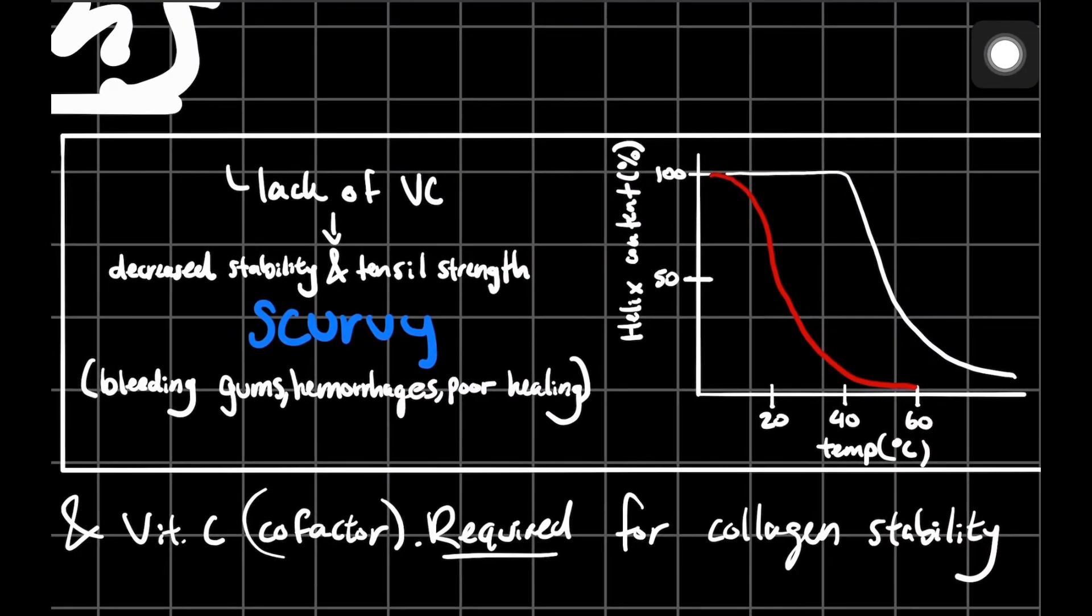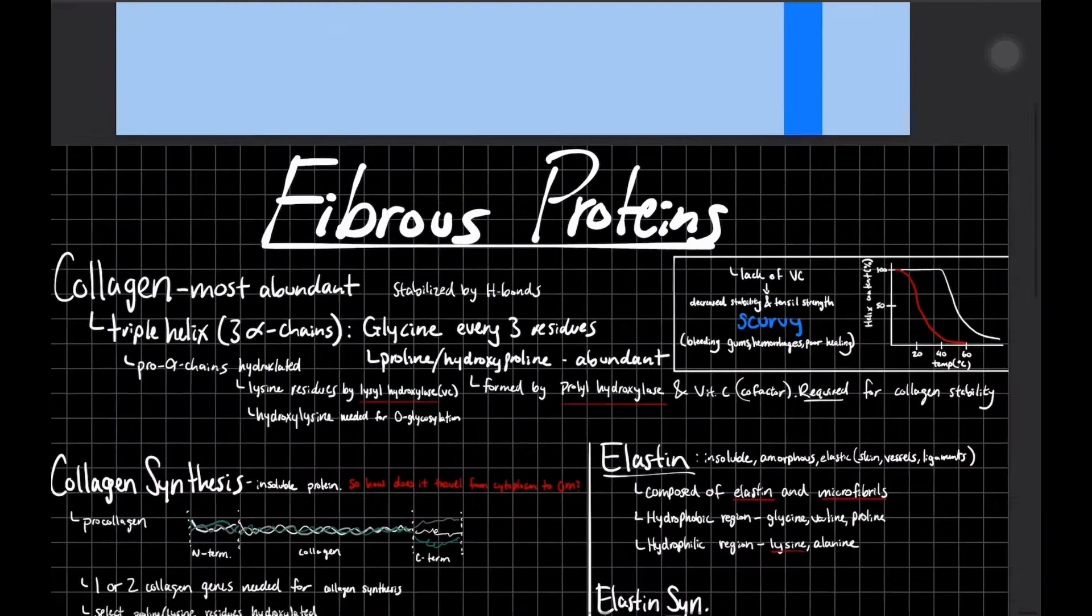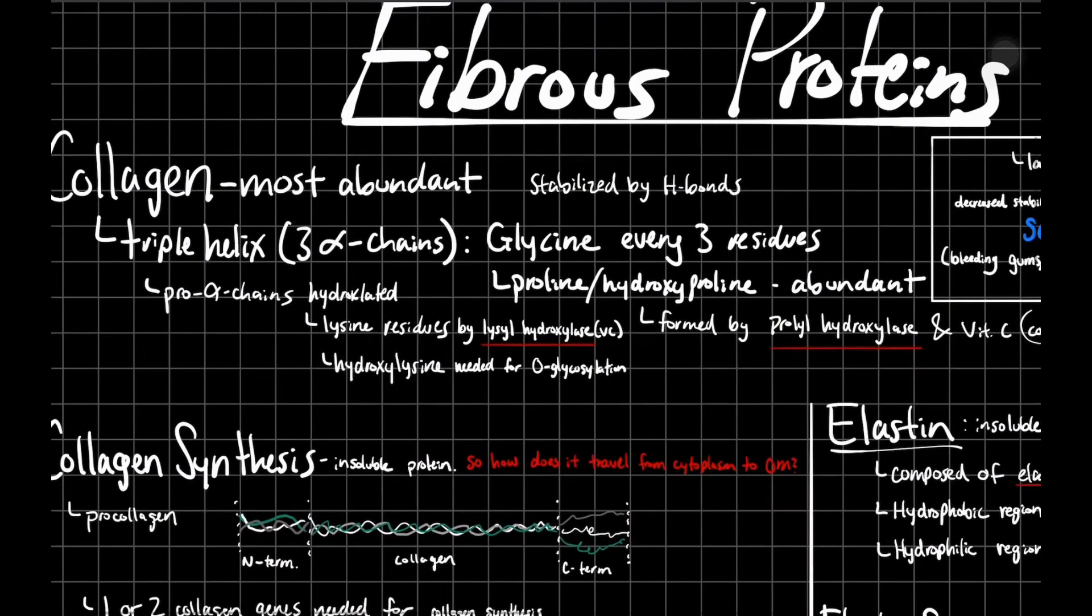Prolyl hydroxylase is extremely important - that hydroxyproline is extremely important in collagen stability. If we take a look at a graph here, looking at the stability of collagen, the helix content based off of a temperature, you can see that at about 40 degrees, which is physiological temperature, with vitamin C as a cofactor, about 100% of your collagen residues are in a helix formation, which is exactly what you need for functional collagen. At around the same temperature without vitamin C as a cofactor, you can see a massive decline in your helical structure. This leads to decreased stability and tensile strength of your collagen, and this disease called scurvy, which you've probably heard of before. It presents with bleeding gums, hemorrhages, and poor healing of wounds.